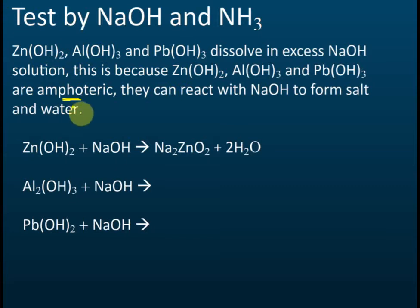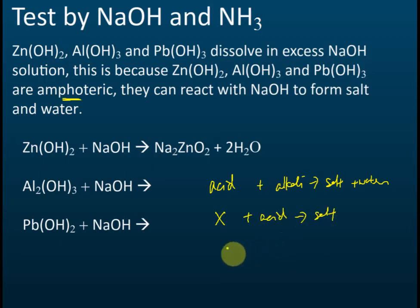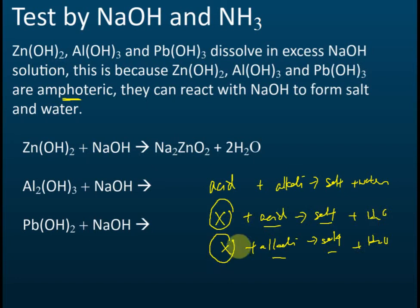What is amphoteric? We have learned that acid can react with alkali to form salt and water. There is also a type of chemical — let's call it chemical X — that can react with acid to form salt and water, and can also react with alkali to form salt and water. These types of chemicals, which react with both acid and alkali, are called amphoteric.